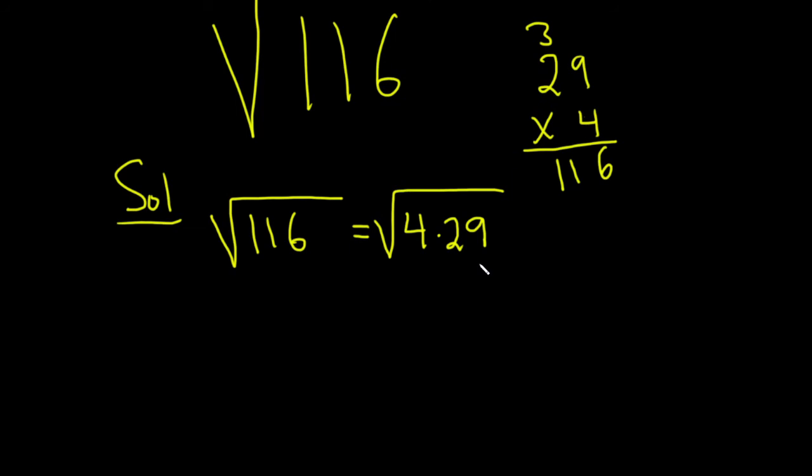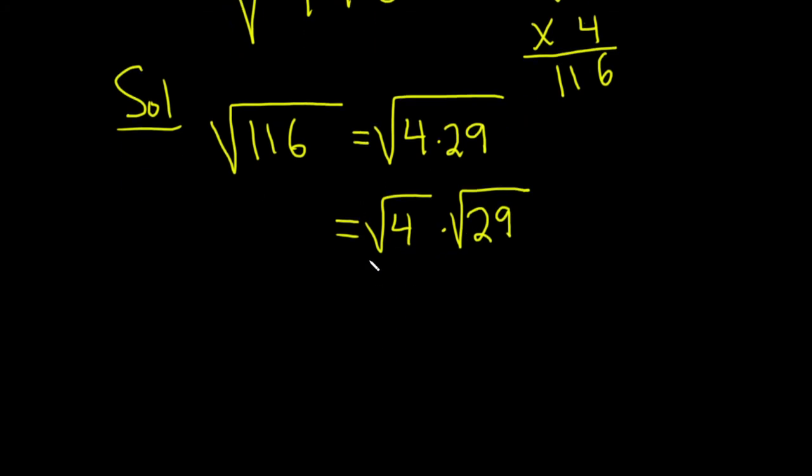And then we can break this up as the square root of 4 times the square root of 29. And then the square root of 4 is 2, so this will be equal to 2 times the square root of 29.